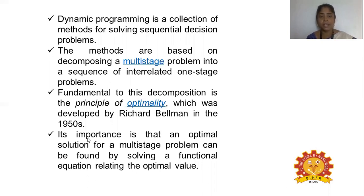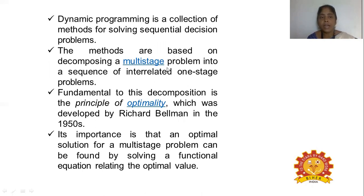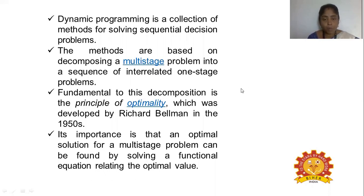The principle of optimality involves making the optimum production of a particular product by utilizing the maximum substrate for any product. This principle was developed by Richard Bellman in the year 1950, and we consider him the father of the principle of optimality. Dynamic programming is multi-stage, involving the derivation of solutions for a single overall problem by solving related sub-problems.